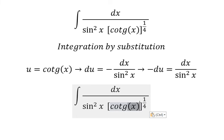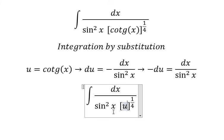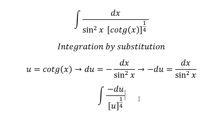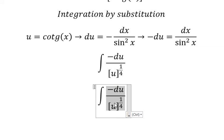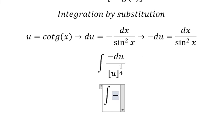So we replace dx over sine squared x with negative du. This becomes the integral of negative u to the power of negative one-fourth, and we have